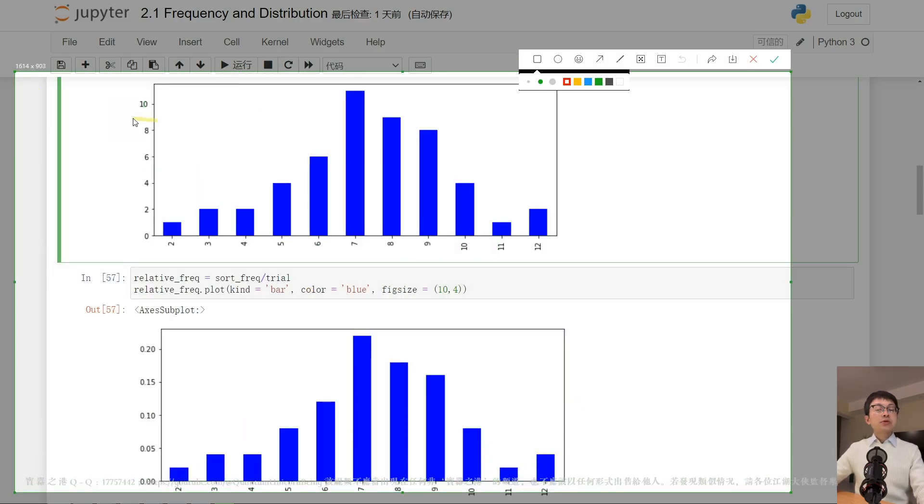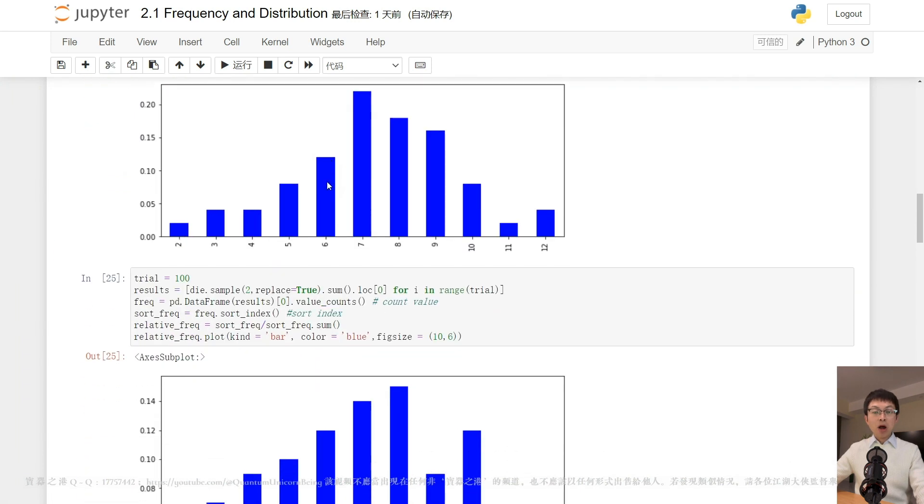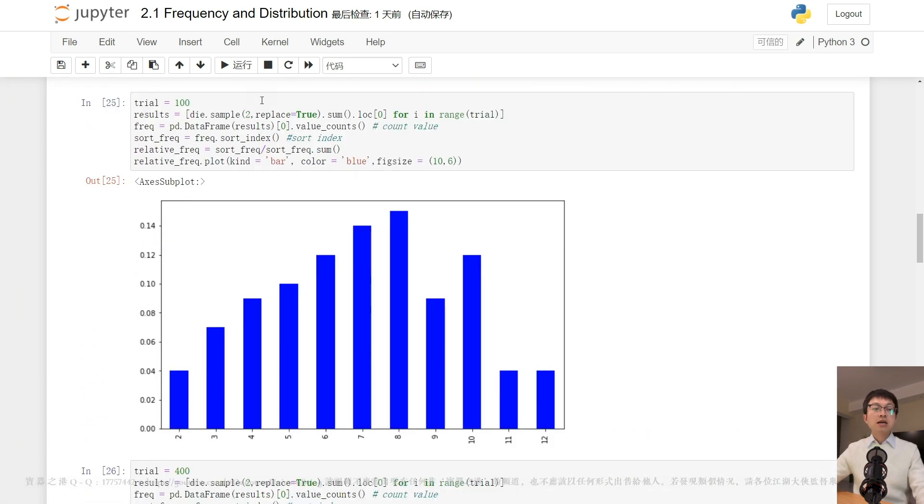Now, let me roll the dice 100 times and see how the bar chart of the frequency for the outcomes looks like.